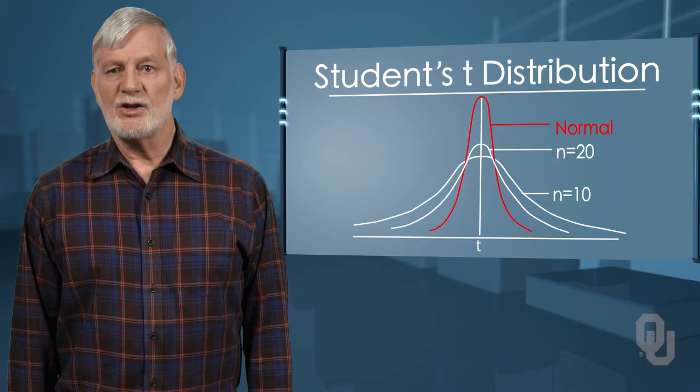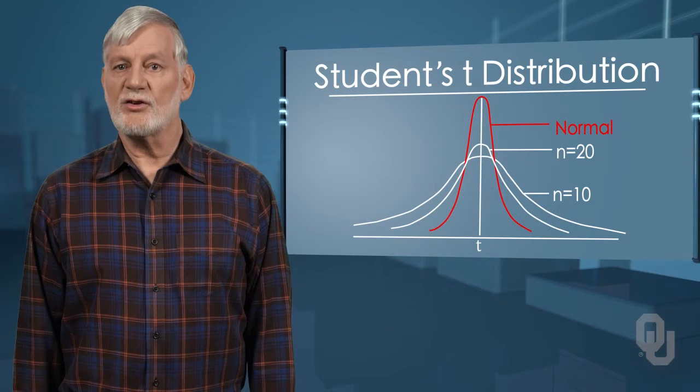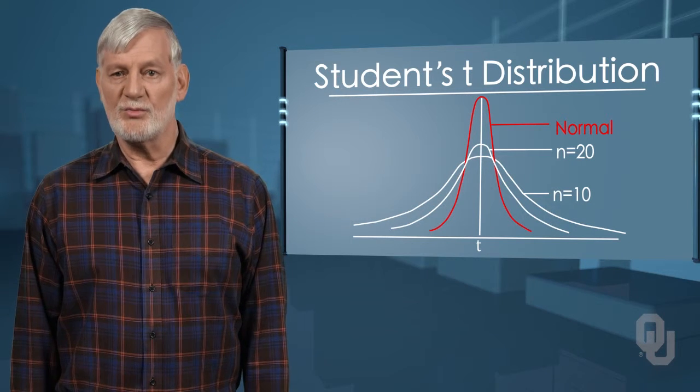This graph shows as the sample size moves from 10 to 20, the student's t-distribution gets closer to the normal distribution, which is marked in a red color.